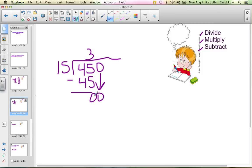And 15 goes into 0 how many times? It goes in there 0 times. And 0 times 15 is 0. And then I subtract. So I divided, multiplied, and subtract. So I want to keep checking it off so I don't get confused. So my answer when I subtract is 0. So my answer is 30.